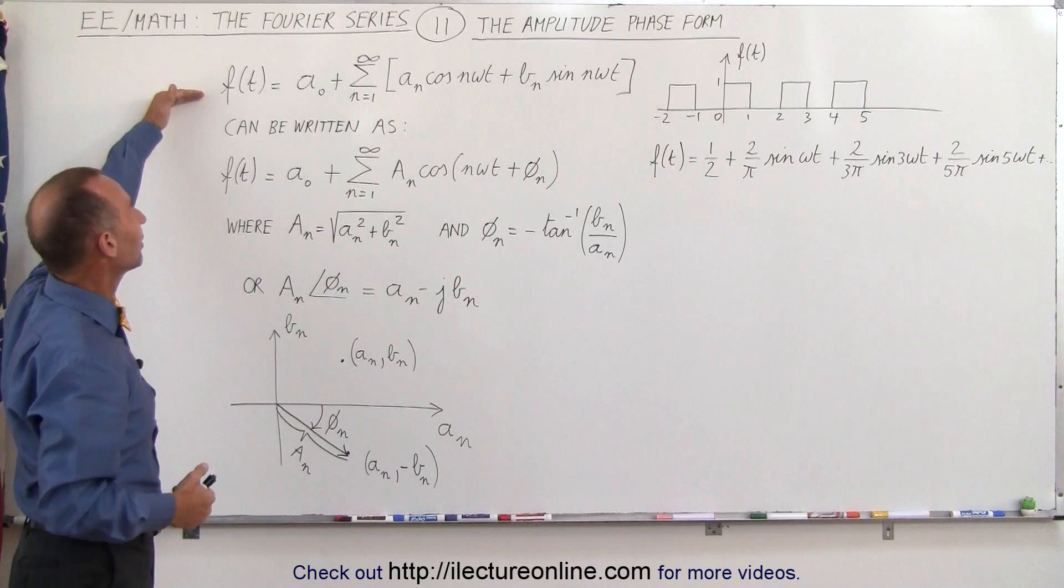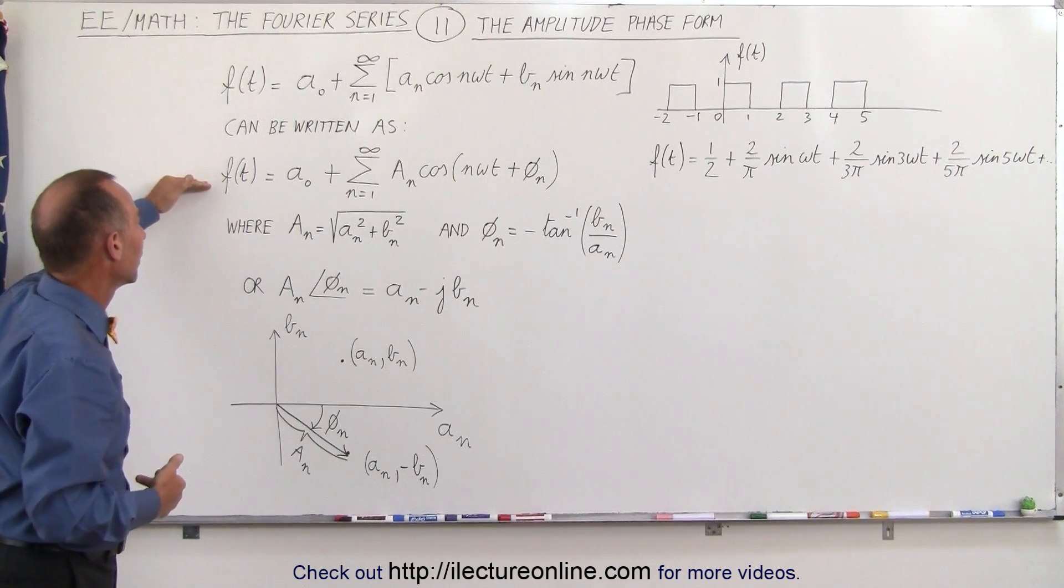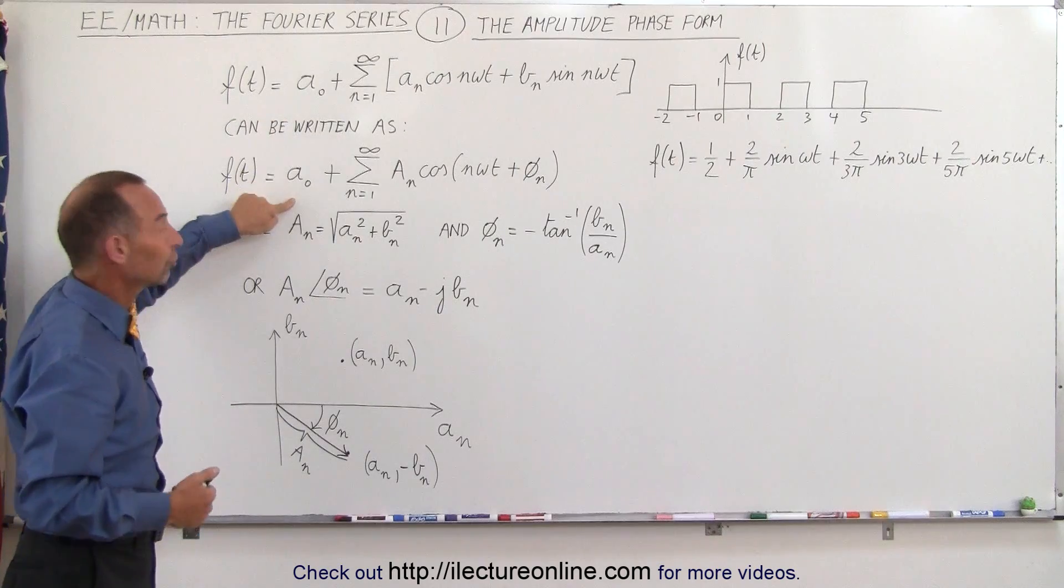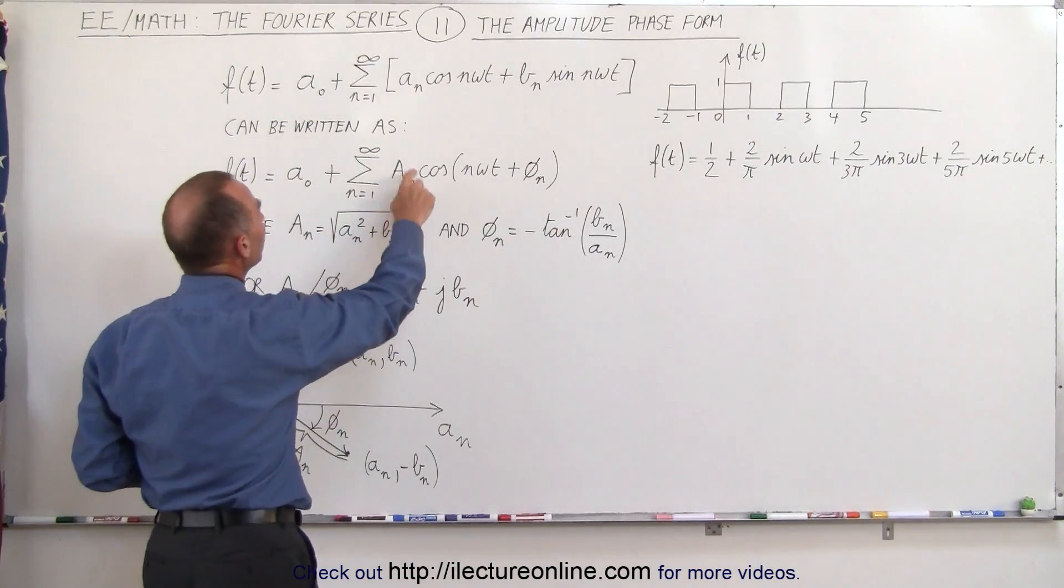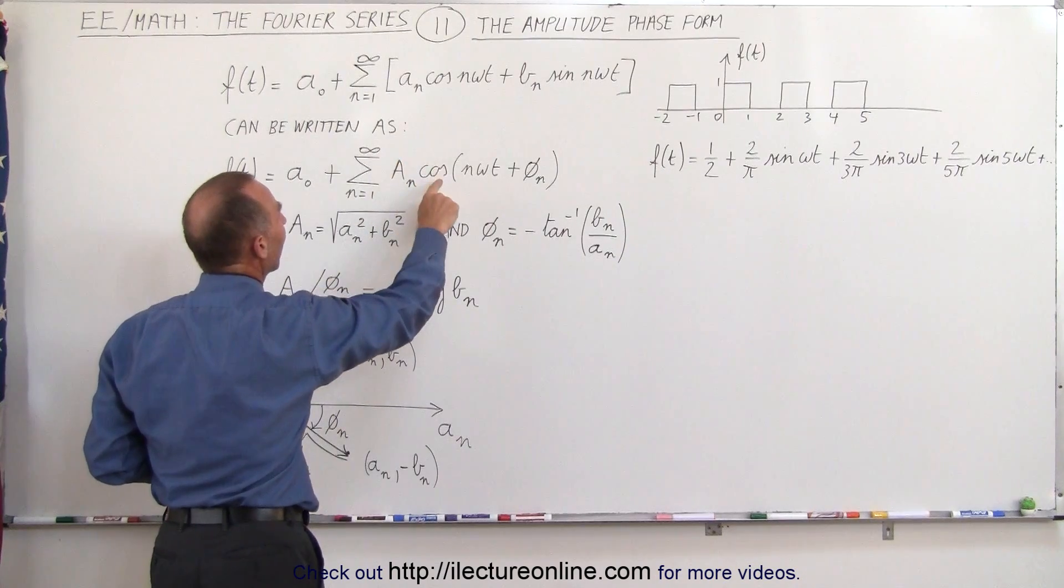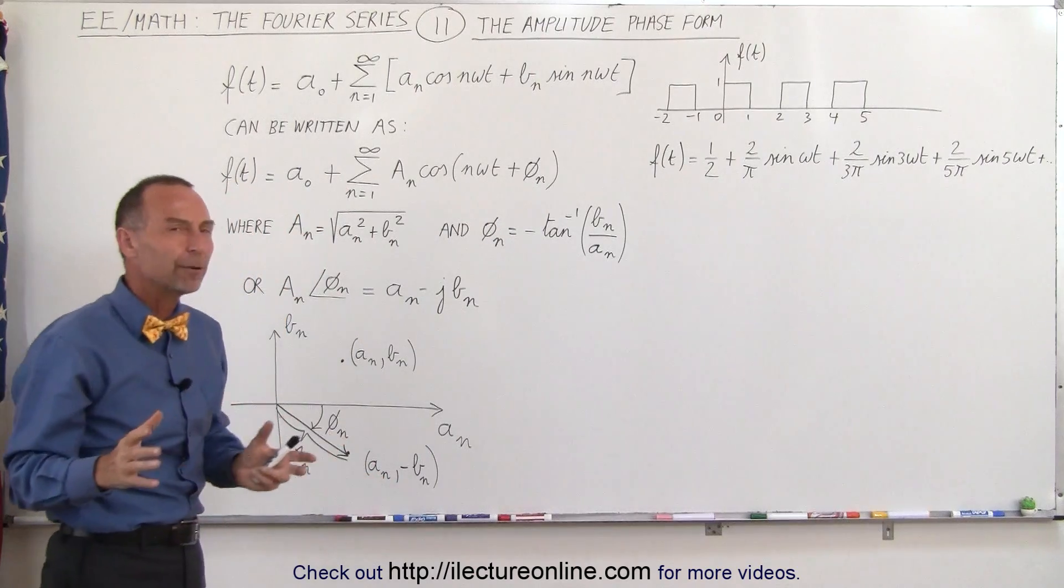But this whole method of writing it can be changed into this particular format right here. Notice we still have the DC term that hasn't changed yet, but here we have a sub-n, which is the amplitude, times the cosine of n omega t plus a phase. Where does that come from?